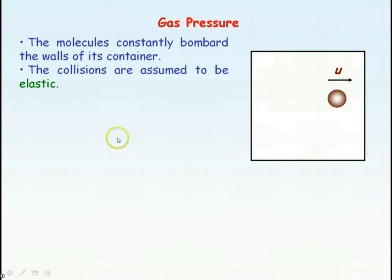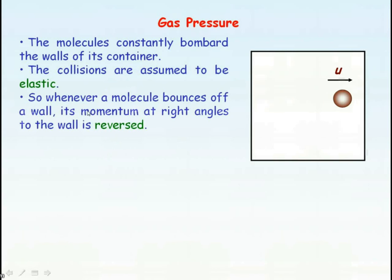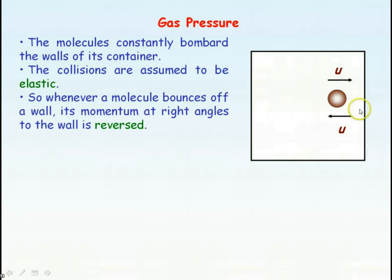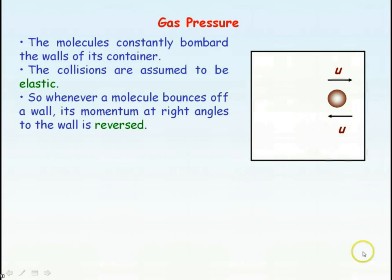Because of the conservation of momentum, when the molecule bounces off at right angles to the wall, its momentum is reversed. So its initial momentum is mu and its final momentum after the collision with the wall is minus mu. So we have a change of momentum — it's not zero. It's final momentum minus initial momentum: minus mu minus mu, which makes it minus 2mu.